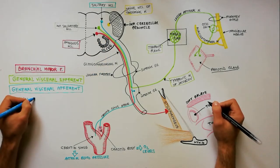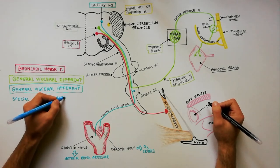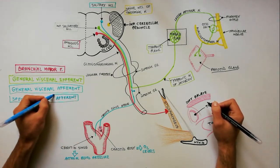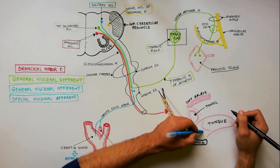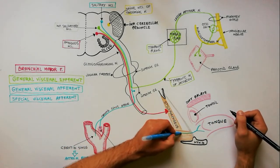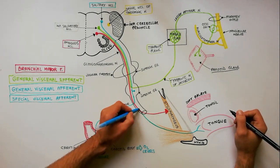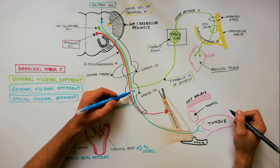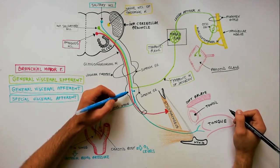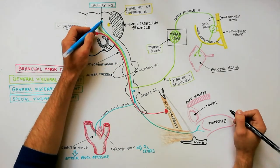Also with the blue color we will indicate the special visceral afferent fibers. Taste sensation from the posterior one third of the tongue is carried by special sensory processes towards neurons in the inferior glossopharyngeal ganglion. Central processes from these neurons are carried further within the glossopharyngeal nerve to reach the rostral part of the nucleus solitarius.